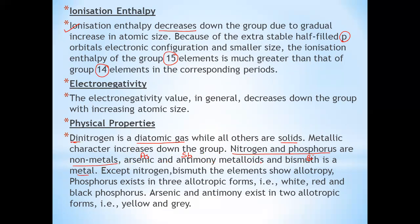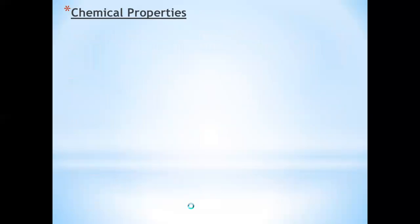Covalent and ionic radius increase in size down the group. There is an increase in covalent radius from nitrogen to phosphorus, but from arsenic to bismuth, only a small increase in covalent radius is observed due to the presence of d and f orbitals.